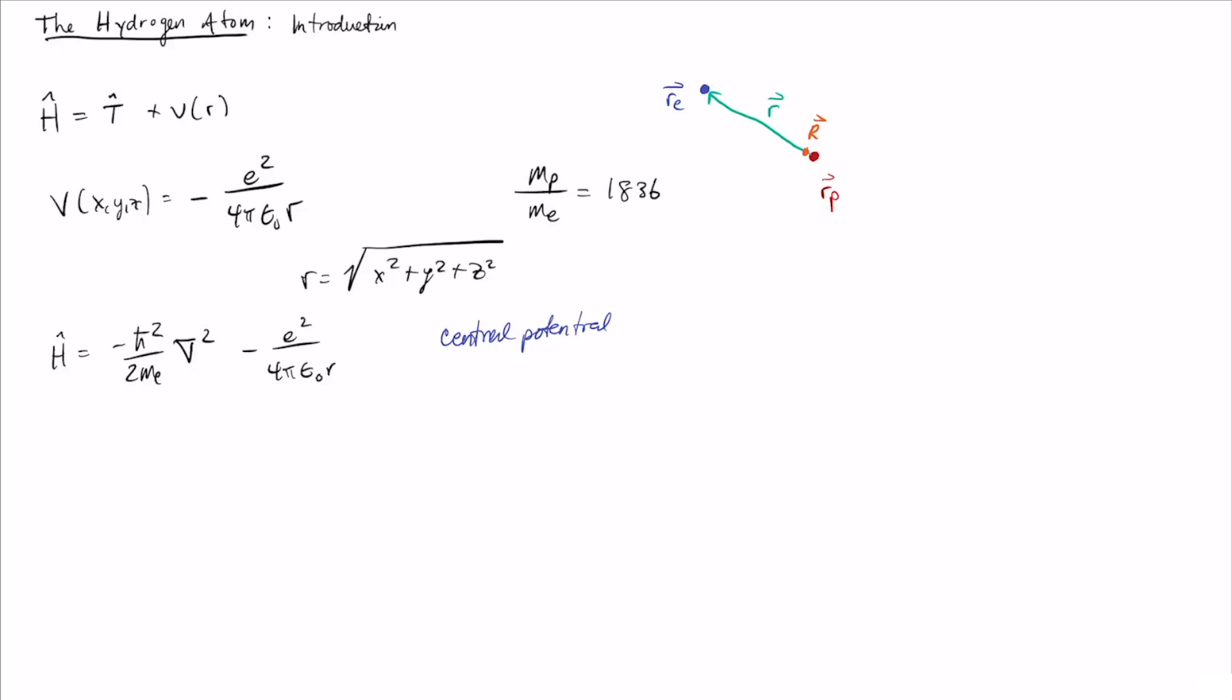So now let's write this out explicitly in spherical coordinates. This is equal to minus ℏ² over 2m_e, and now we have to write out the Laplacian in spherical coordinates.